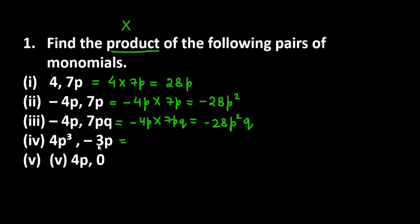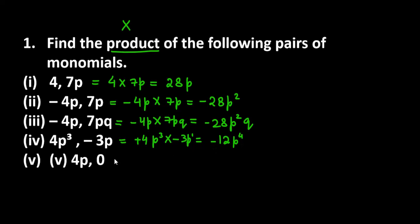Now we have plus 4p³ multiplied by minus 3p. Multiply 4 and 3 to get 12, and the minus sign also comes. Now how many p's total? This one has 3 and this one has 1, so total becomes 4. The answer is minus 12p⁴.